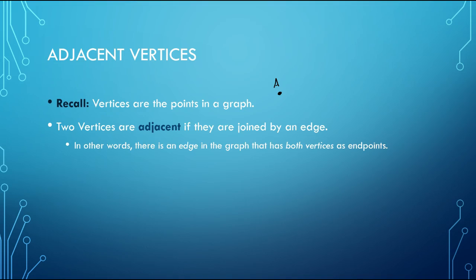Now, what makes two vertices adjacent? Well, two vertices are adjacent if they are joined by an edge. So if we take this vertex and connect it to another vertex, these are now adjacent because they are directly connected with one another via an edge. We can also say that two vertices are adjacent if there's an edge in the graph that has both vertices as endpoints. So if you see this edge in a graph, notice that these two vertices share that edge. So they are adjacent.